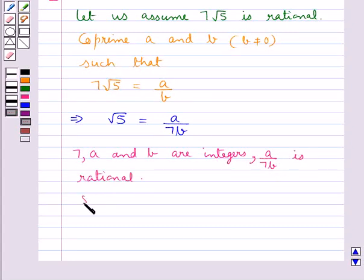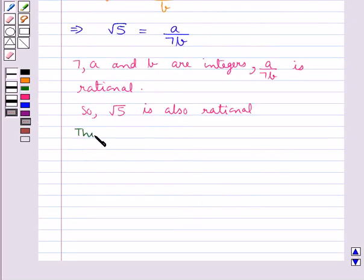So from here we get root 5 is also rational. But this contradicts the fact that root 5 is irrational.